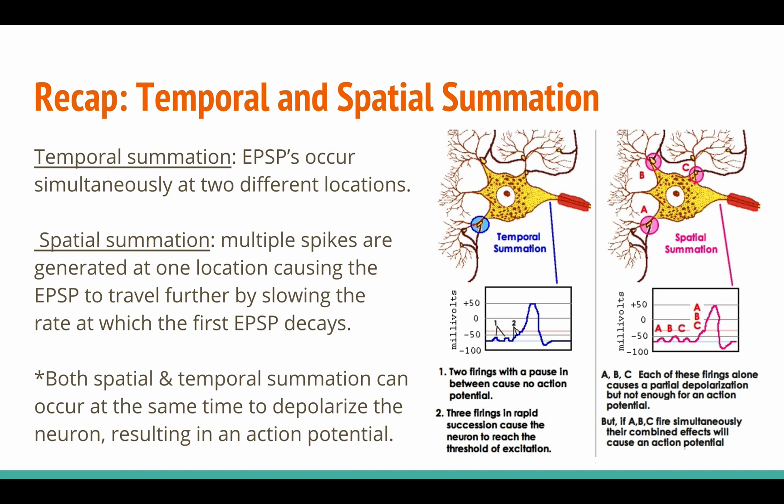Temporal summation occurs when EPSPs are generated simultaneously at two different locations on the neuron. Spatial summation occurs when multiple spikes are generated at one location, causing the EPSP to travel further by slowing the rate at which the first EPSP decays. Both spatial and temporal summation can occur at the same time to depolarize the neuron, and with enough depolarization, the postsynaptic neuron will fire an action potential.